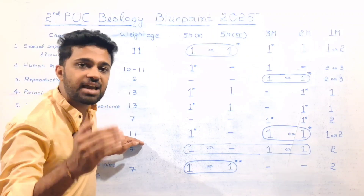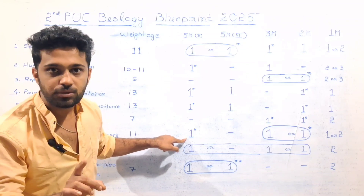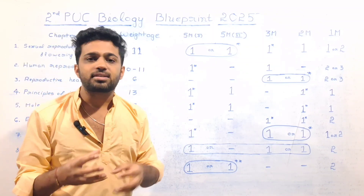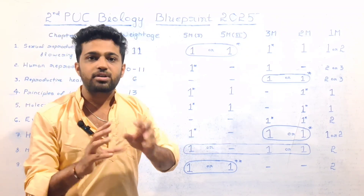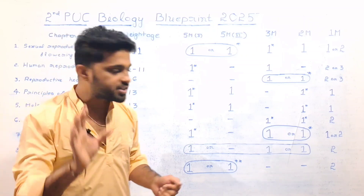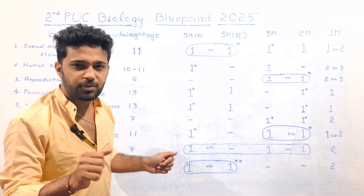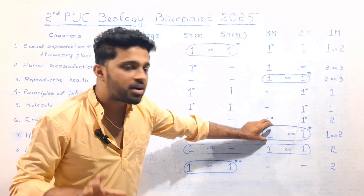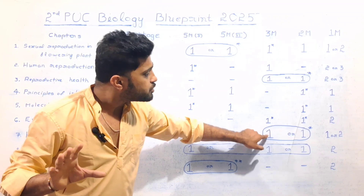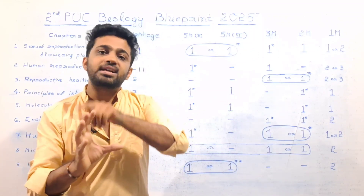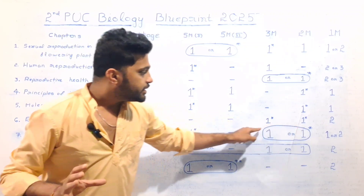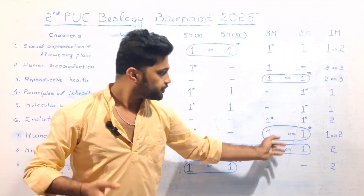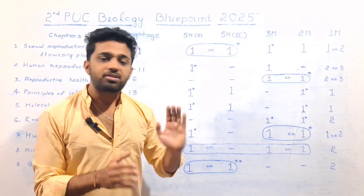Next is Human Health and Diseases. This chapter is allotted 11 marks — about 22 marks across blueprints. This chapter has 5-mark questions. The 5-mark question is 100%, 2 marks and 3 marks are 100%. If you look at the circle mark, that means 3 marks and 2 marks are 100%, and 1 mark and 2 marks are 100%.